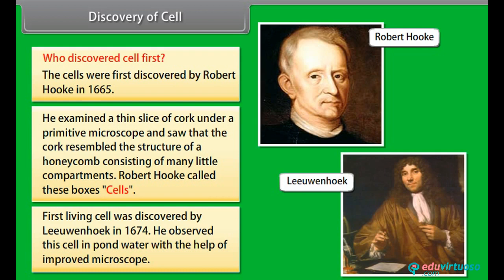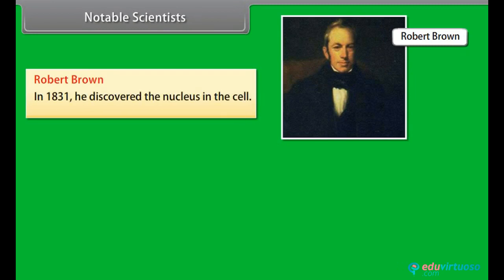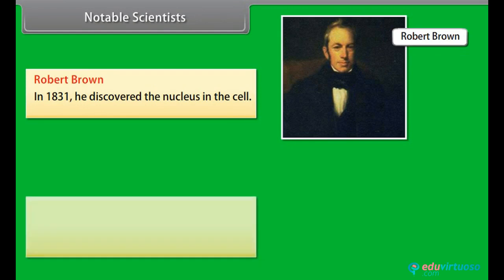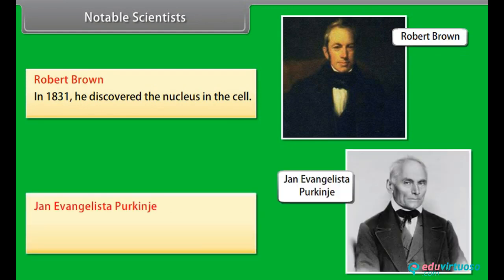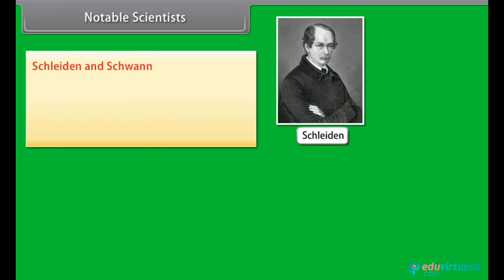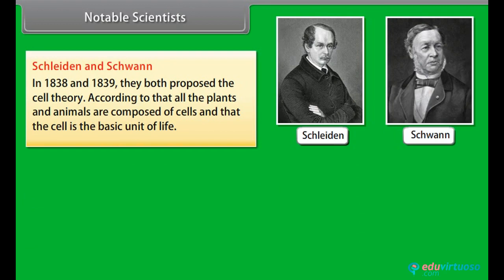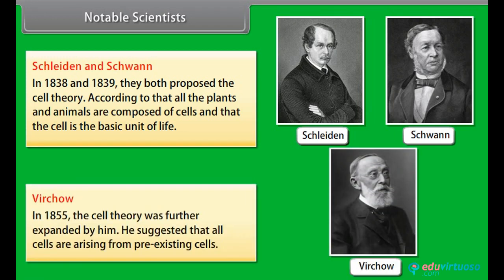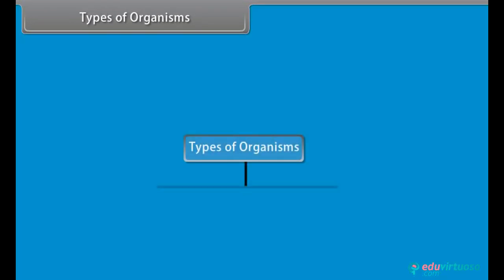Notable scientists: Robert Brown in 1831 discovered the nucleus in the cell. Jan Evangelista Purkinje in 1839 coined the term 'protoplasm' for the fluid substance of the cell. Schleiden and Schwann in 1838 and 1839 proposed the cell theory — that all plants and animals are composed of cells and that the cell is the basic unit of life. Virchow in 1855 further expanded the cell theory, suggesting that all cells arise from pre-existing cells.